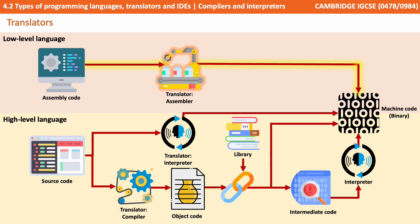In the previous video we looked at low-level languages, and we said that low-level languages are written in assembly code — that's our source code. They're then translated using a specific assembler directly into binary machine code.